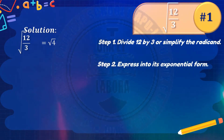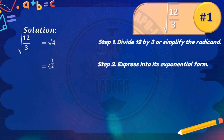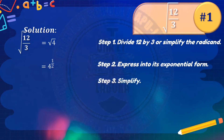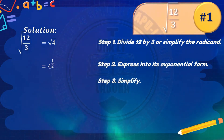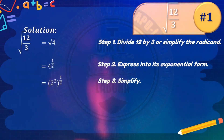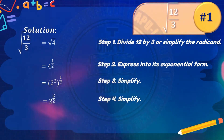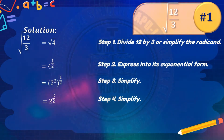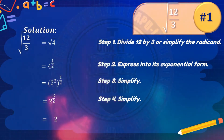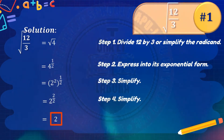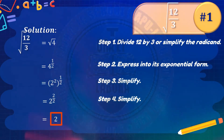Continue simplifying 4 raised to 1 half: express 4 as 2 squared, giving quantity 2 squared raised to 1 half, which equals 2 raised to 2 over 2. Since 2 over 2 is 1, you get 2 raised to 1, or simply 2. So the square root of 12 over 3 is 2.